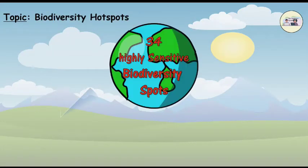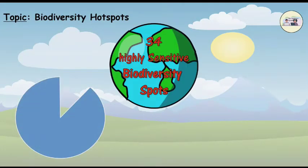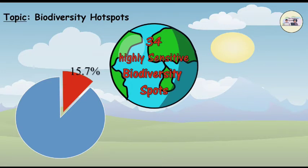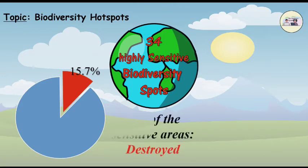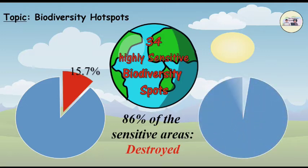Biodiversity Hotspots: 34 highly sensitive biodiversity spots are reported all over the world. Such areas had once occupied 15.7% of the earth. At present, 86% of these sensitive areas are already destroyed, and only 2.3% of the area of the earth has been left with biodiversity.